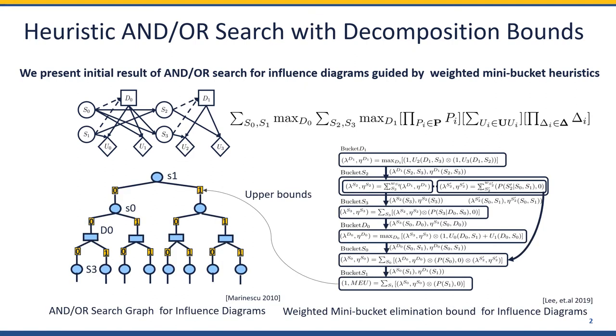The annual search with decomposition-based heuristic has been proved effective for many probabilistic inference queries such as MAP inference, summation, and marginal MAP.